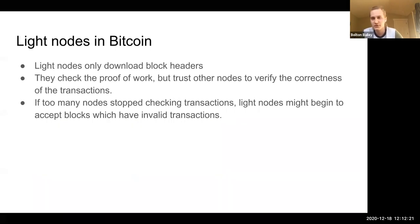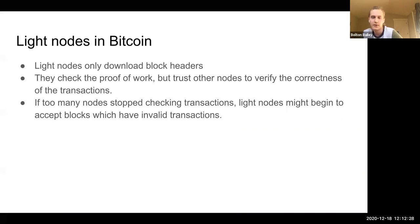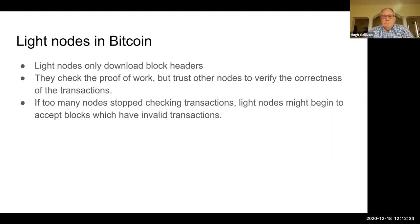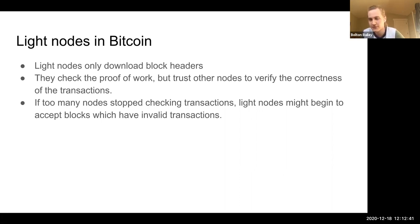The classic solution from the Bitcoin white paper is to use a light node. A light node only downloads the block headers and checks the proof of work in those headers of the Bitcoin blockchain. Does everyone know what a block header is?